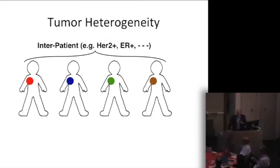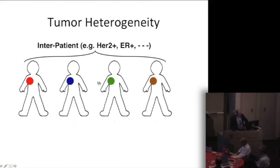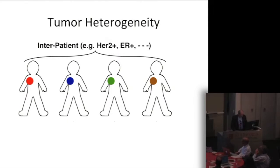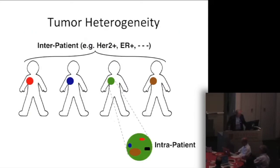Tumor heterogeneity is something that we talk a lot about, and we mean various things by it. Some people mean the variation from one person to the next — even though we call the cancer by the same name, different people may have different versions, different mutations, and different driving forces behind their disease. Often when we talk about personalized medicine, we talk about picking the right drug or the right treatment for the individual patient. That's a very important problem, but it's not the one we're going to be focusing on here. Rather, we're going to be talking about the variation within an individual patient's tumor, between one cell and the next.